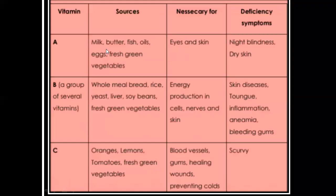Sources, uses, and diseases caused due to vitamin deficiencies. Vitamin A is present in milk, butter, fish, fish oils, eggs, and fresh green vegetables. It is important for eyes and skin. Deficiency of vitamin A may cause night blindness — a person may be unable to see at night — and also dry skin.